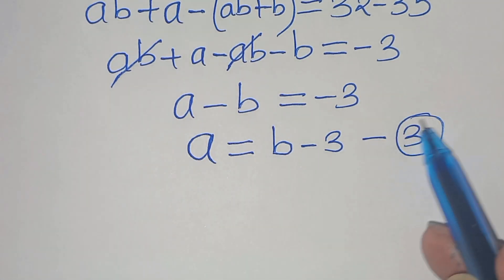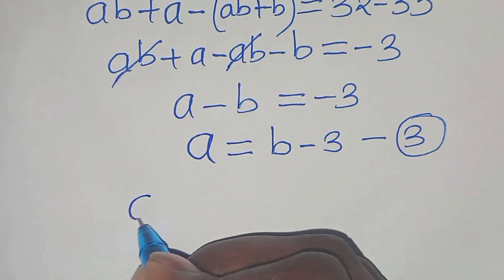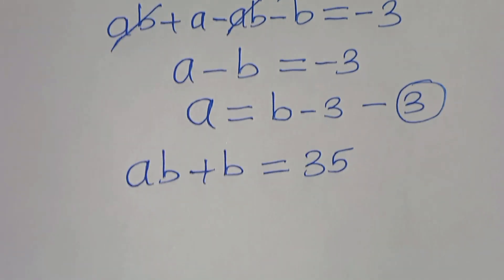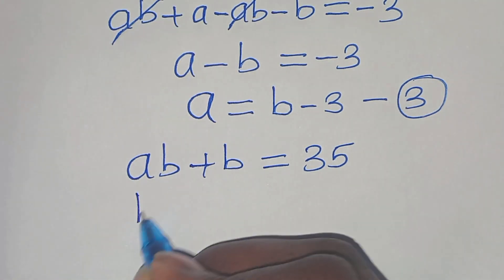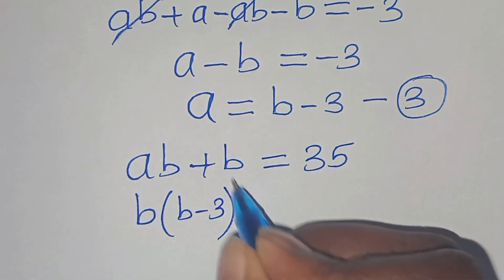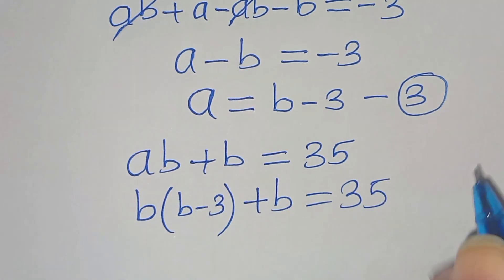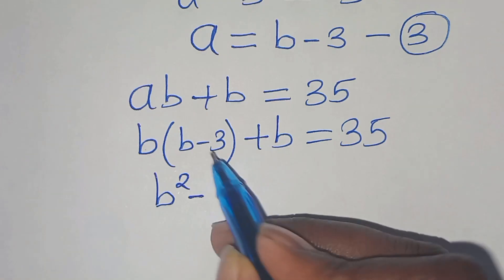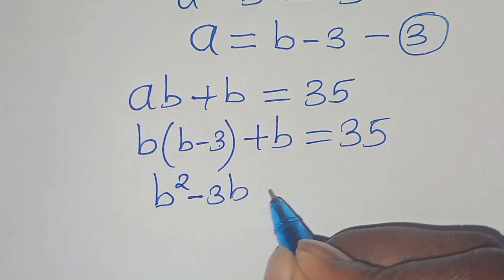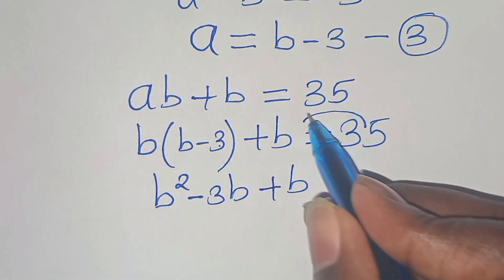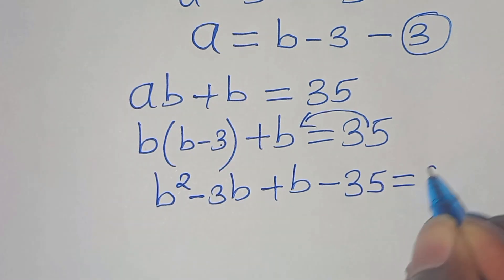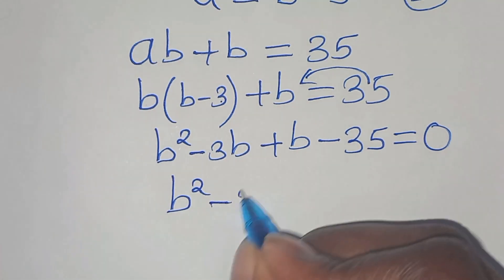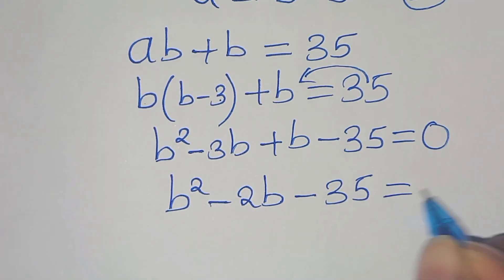The next step is to substitute equation 3 into equation 2. Remember equation 2 is ab plus b, this is equal to 5. Substituting a, we have b multiplied by b minus 3, then plus b, this is equal to 5. Opening the parentheses: b times b is b squared, minus 3 times b is minus 3b, plus b, equals 5. Taking 5 to the left-hand side: b squared minus 3b plus b minus 5 equals 0, which gives b squared minus 2b minus 35 equals 0.